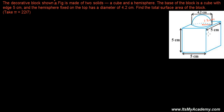To find the total surface area, we need to understand that this shape is made with two objects. The first is the hemisphere. Initially it was a sphere, and when you cut a sphere in half you get a hemisphere, and at the cut you get a circular face.